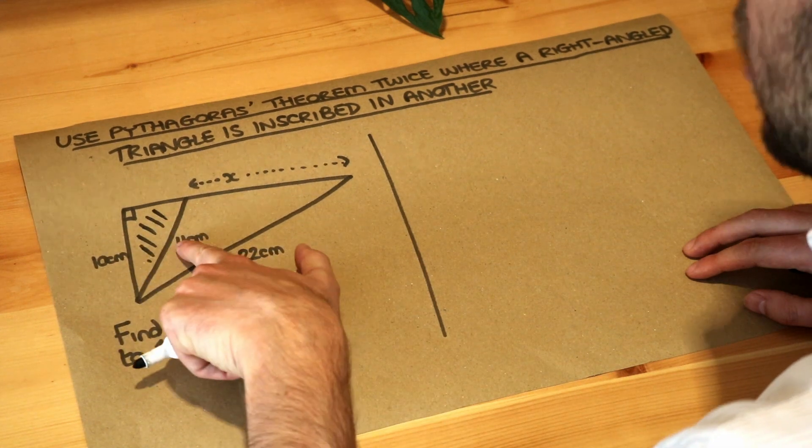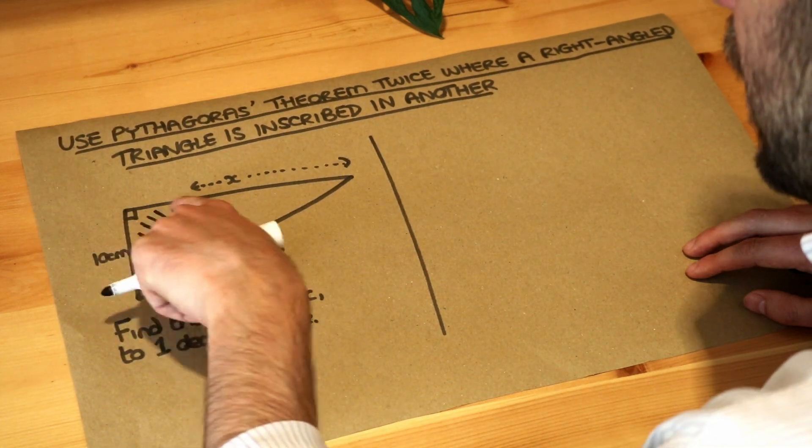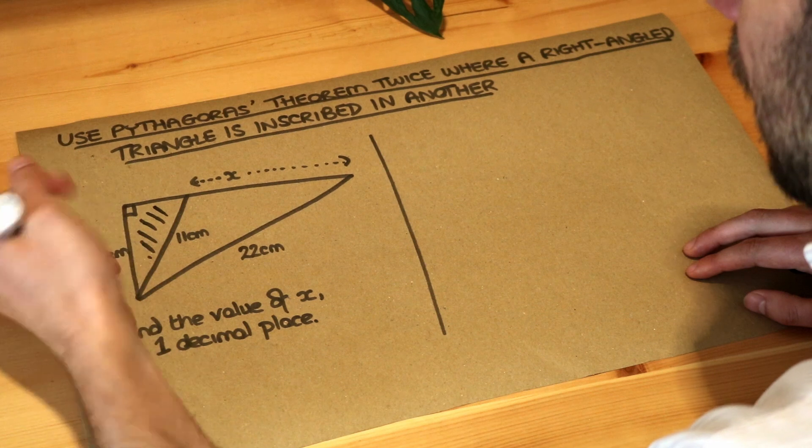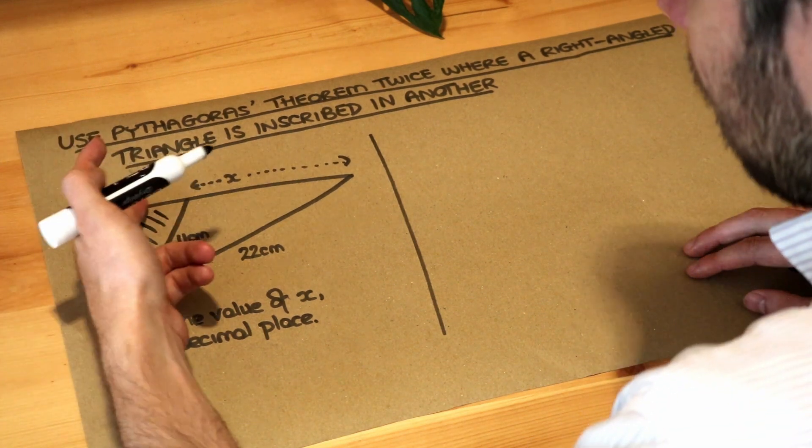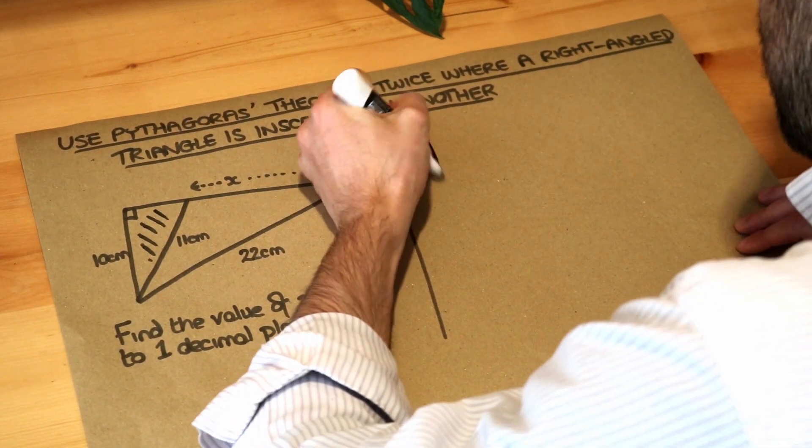Now on this shaded triangle, we do have two of the sides so we could find this third side and then once we've got that third side, we can do some stuff with that hopefully to find out x. So let's do that first.